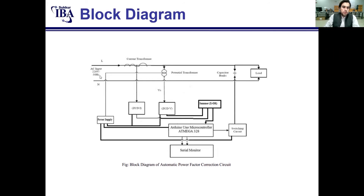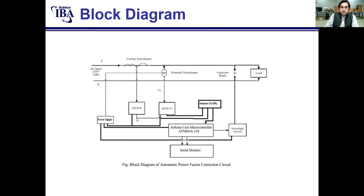Now this is the block diagram. This is the 220V AC supply. This one is the current transformer and this one is the potential transformer. The current transformer is connected in series while the potential transformer is connected in parallel. This is the inductive load connected to the power supply. The current transformer is fed into ZCD-I and the potential transformer is fed into ZCD-V. These are both zero-crossing detector circuits. They convert the sine signal into a digital signal — a square wave.